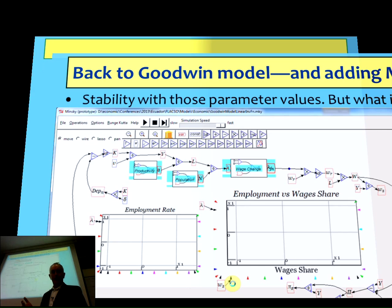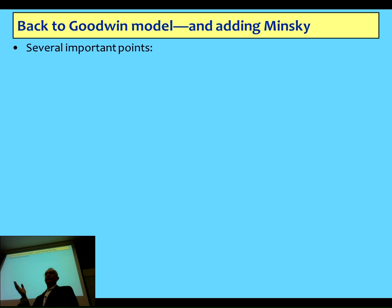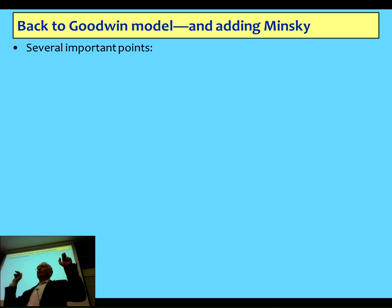I wrote the model in late 1992 and wrote up the paper in early 1993; it was published two years later. I wrote it before the Great Moderation, but I finished with what I thought was a rhetorical flourish, saying that the chaotic dynamics explored in this paper should warn us against regarding a period of tranquility in a capitalist economy as anything other than a lull before the storm.